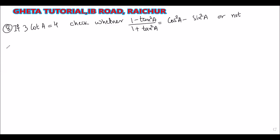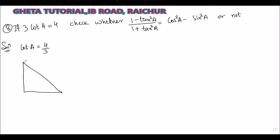So here is the solution. cot A = 4/3. First we have to draw the triangle — the same triangle for all questions. This is triangle ABC, so what is the ratio of cot?